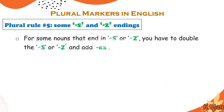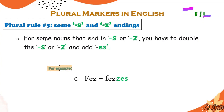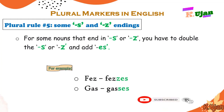Here is rule number 5: S and ZA endings. For some nouns that end in S or Z sounds, you double the final letter and add -ES. For example, phase becomes phases — doubling the Z sound and adding ES. And guess becomes guesses — ending in an S sound, doubling S and adding ES. This is rule number 5.